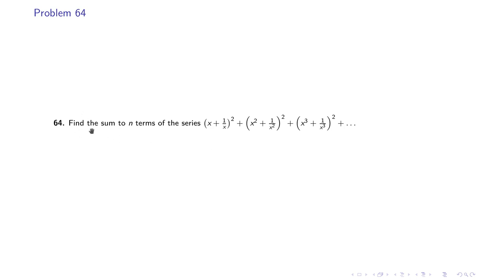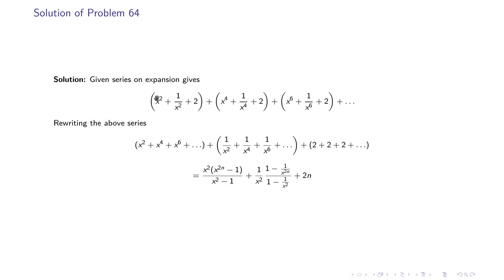Problem 64: Find the sum to n terms of (x + 1/x)² + (x² + 1/x²)² + (x³ + 1/x³)² + ... After squaring, we get: x² + 1/x² + 2, then x⁴ + 1/x⁴ + 2, then x⁶ + 1/x⁶ + 2, and so on.